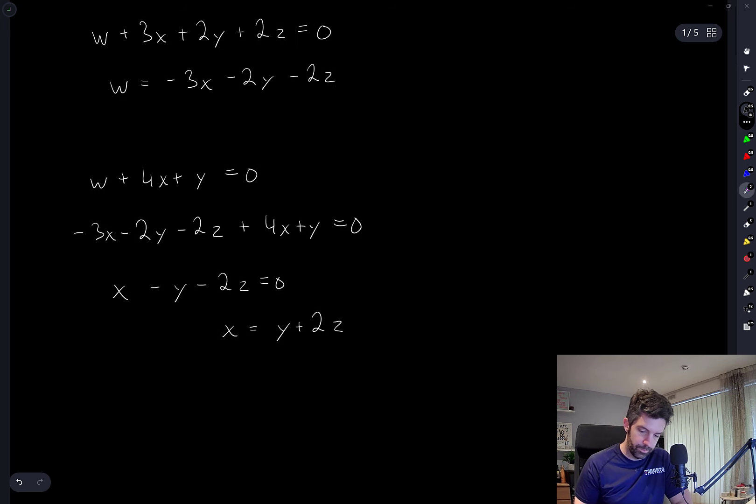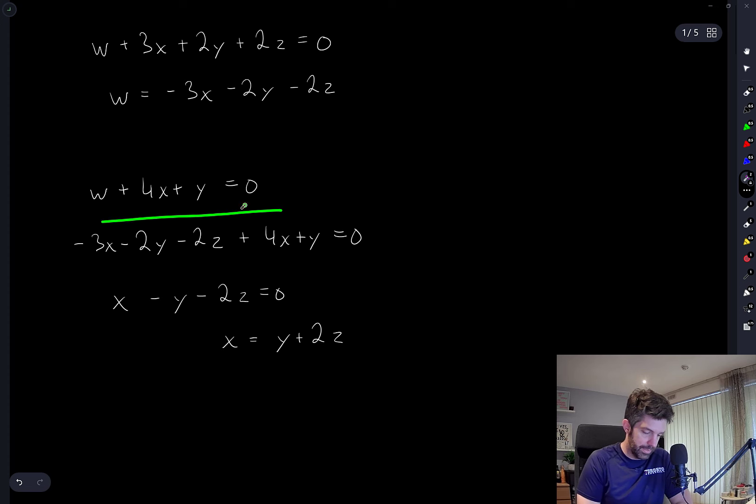Okay, so starting with that second equation, eliminating W and simplifying gives this, which now allows me to write X in terms of Y and Z.